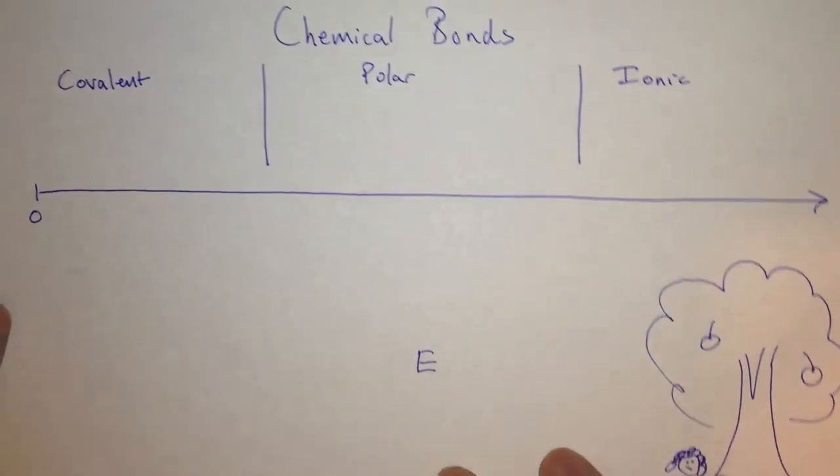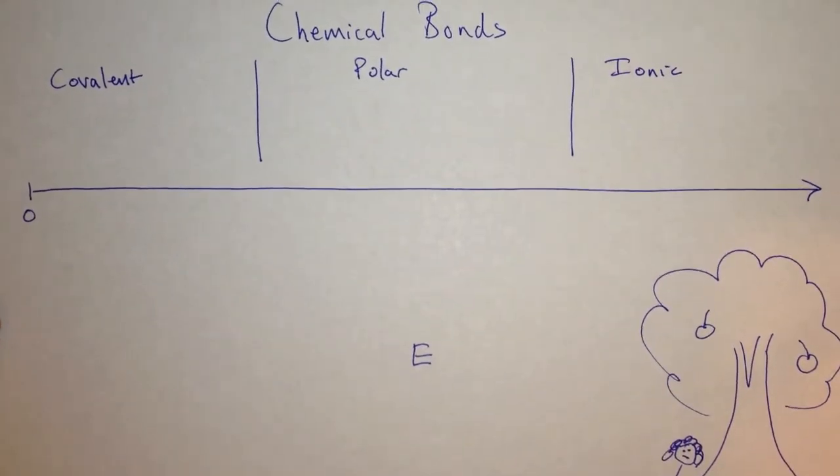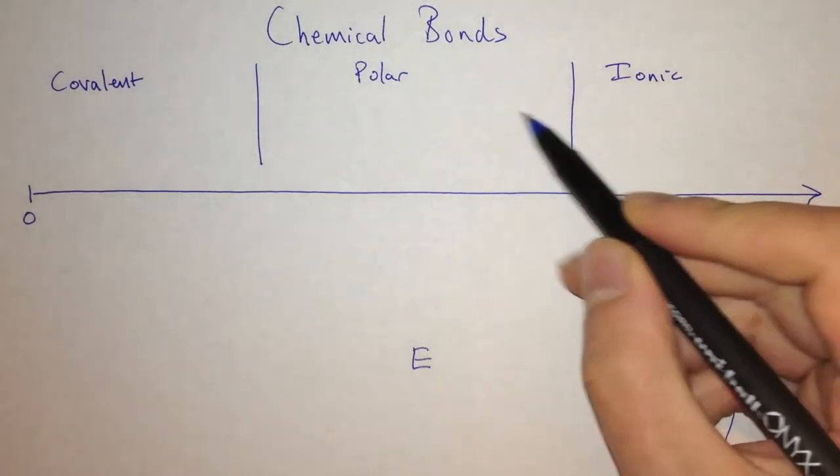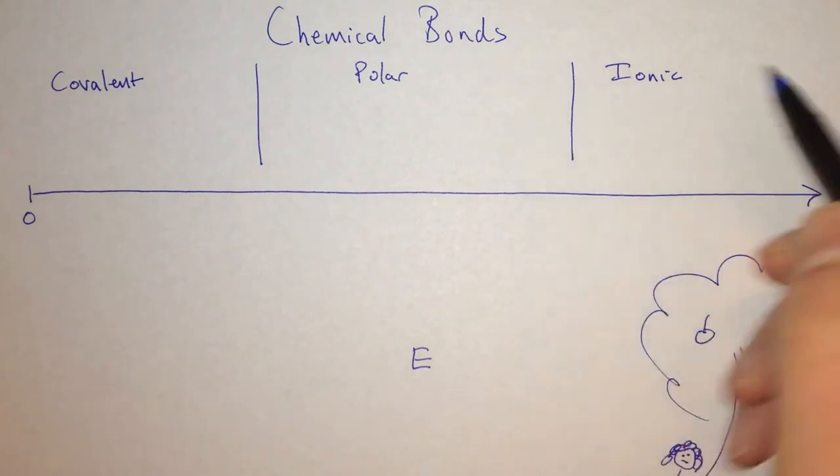But first, we need to talk about the types of chemical bonds. There are three kinds: covalent, polar, and ionic.